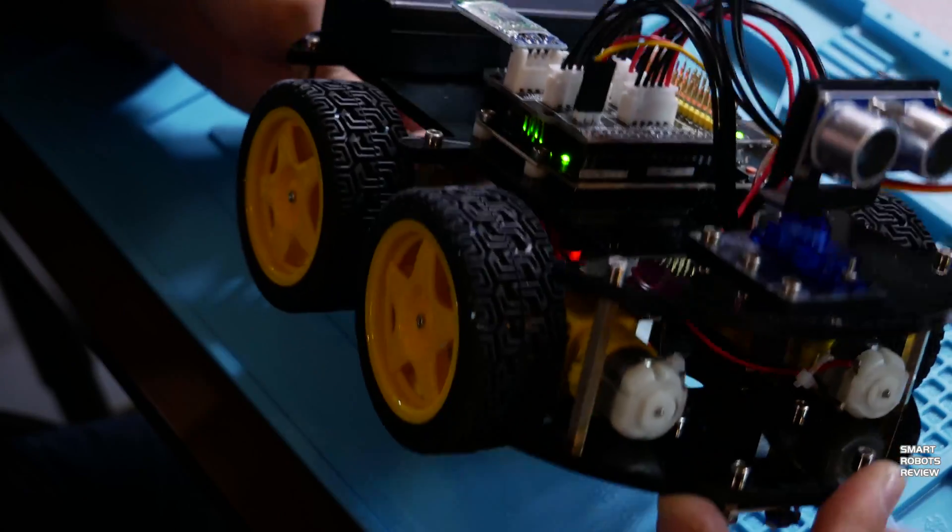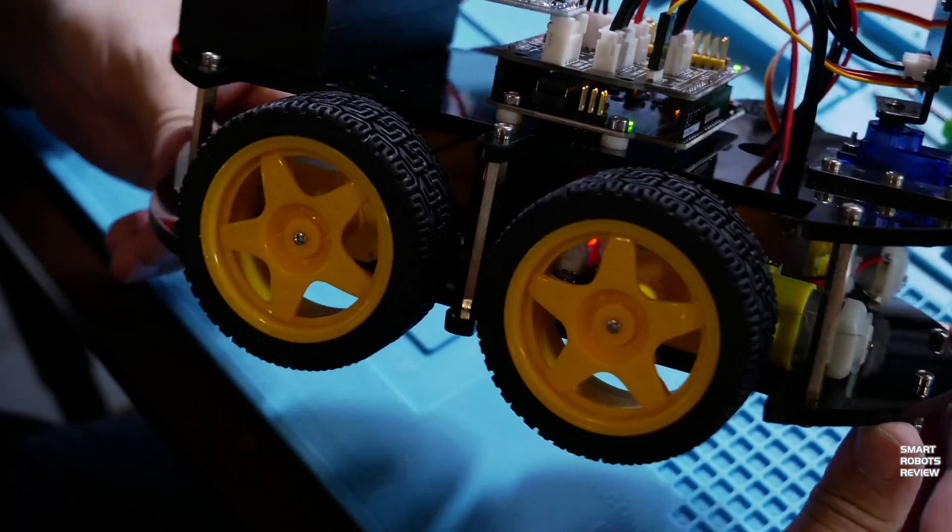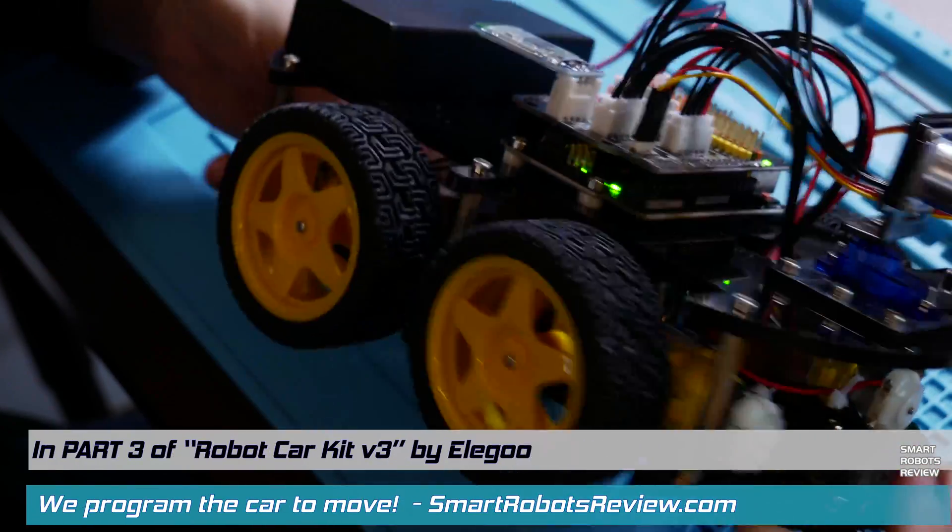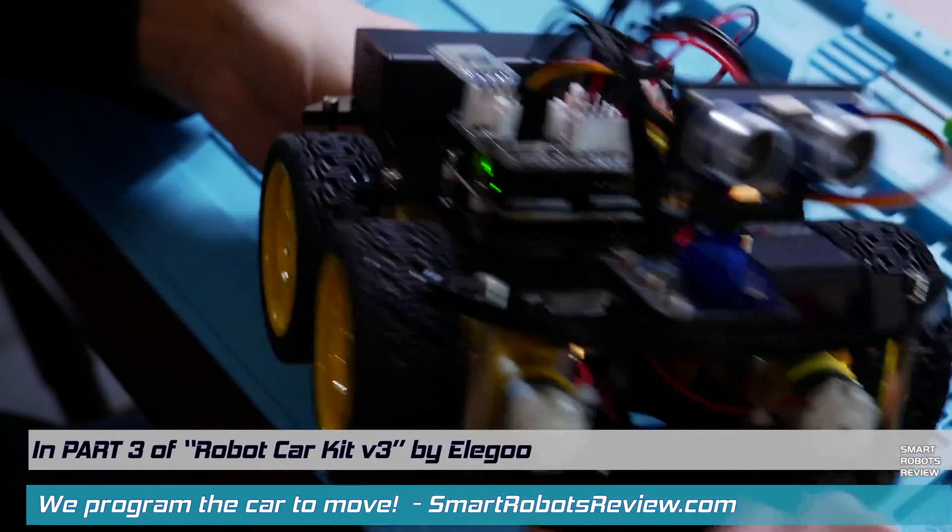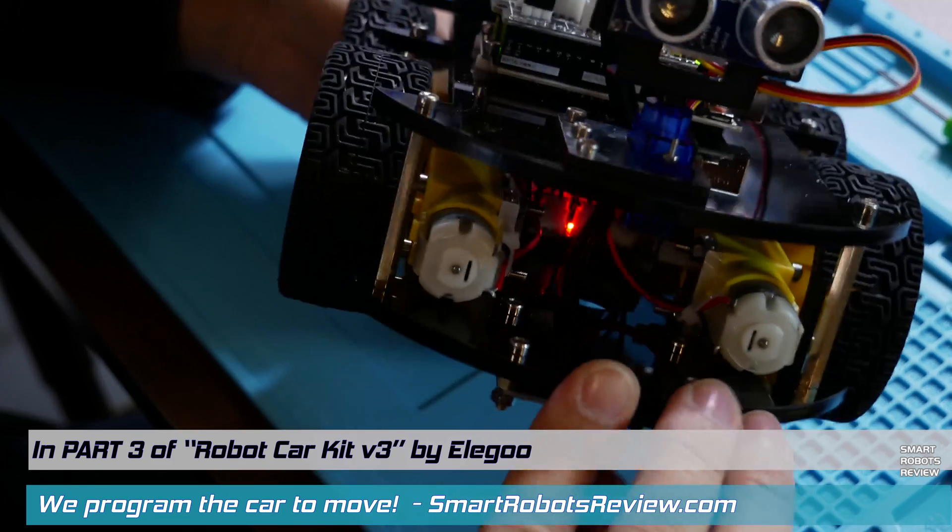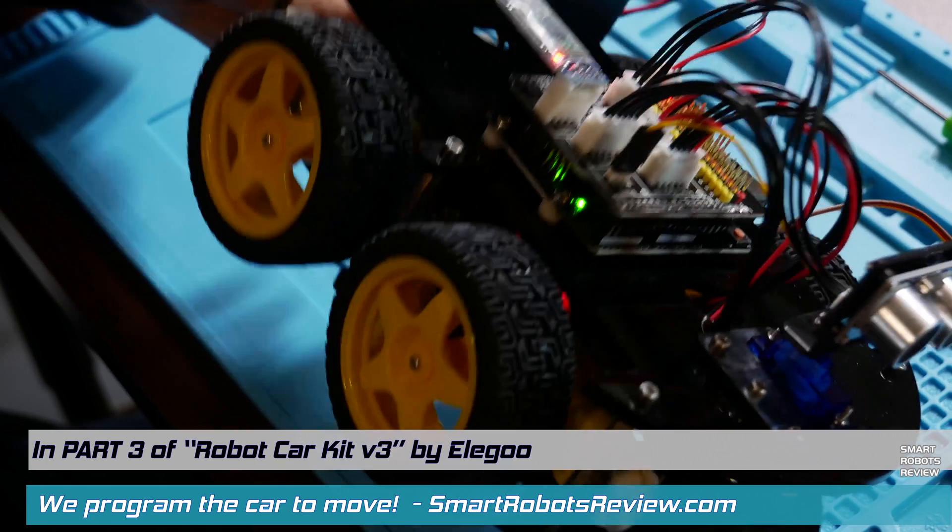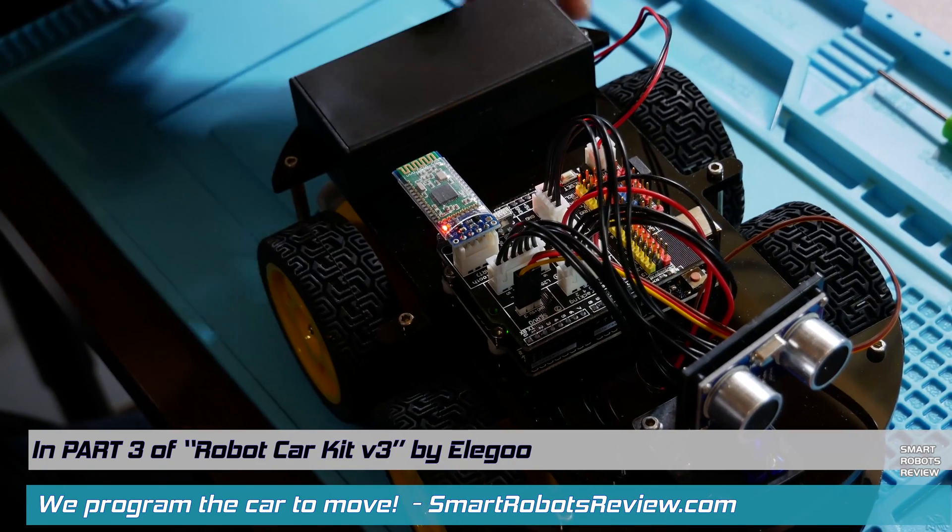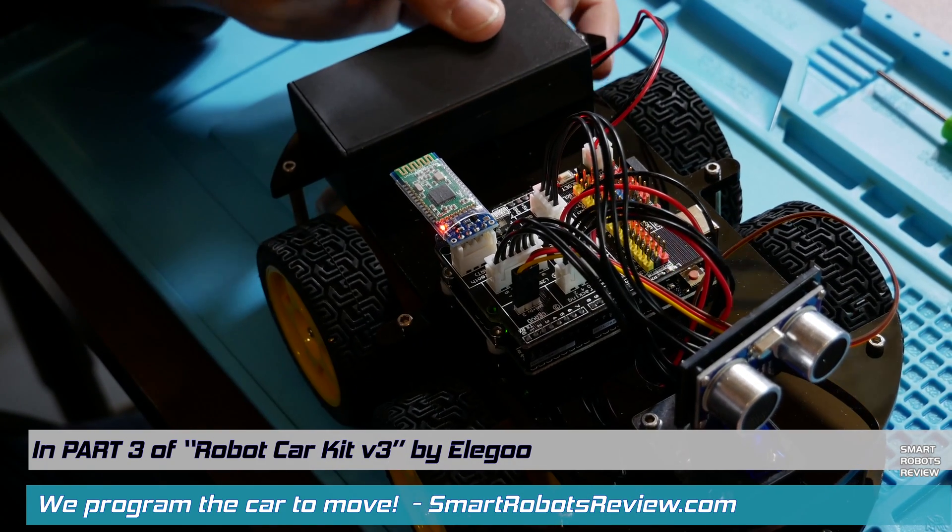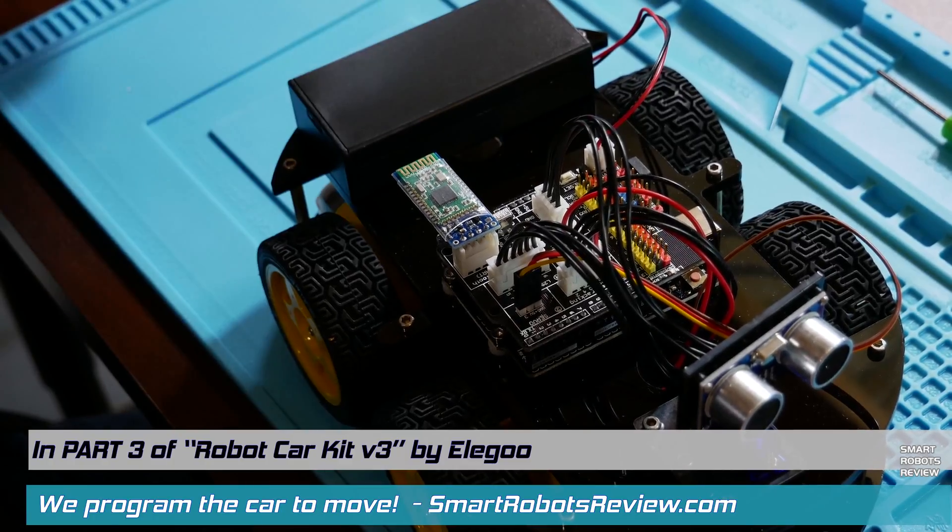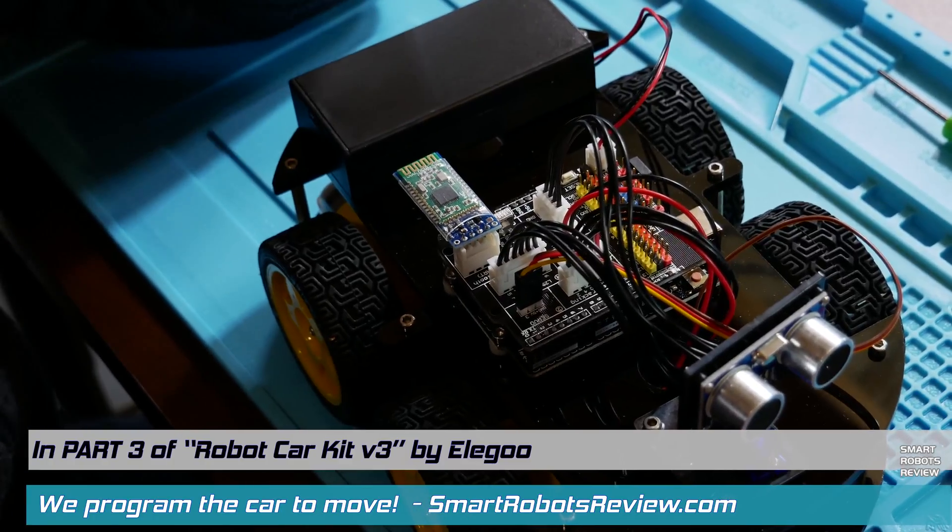So what did everybody think about part one and part two of this new series? We're building our own robotic smart car. We're going to program it. We're going to learn a lot about these electronics. Leave me your feedback, your comments, your questions down below. This is the Smart Robot Kit by Elegoo, available on Amazon. And until next time, thank you for watching, Smart Robots Review.